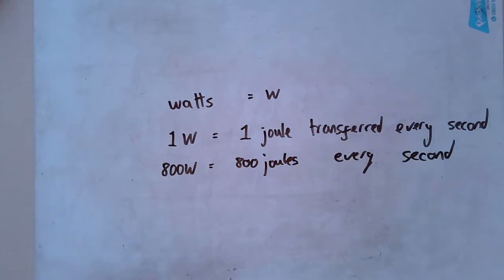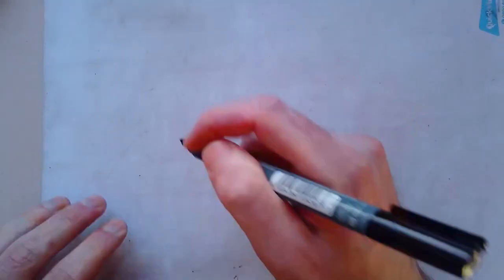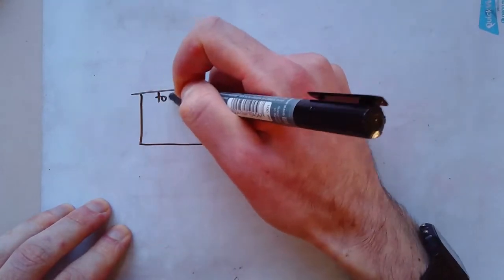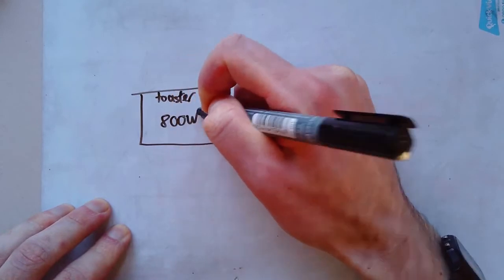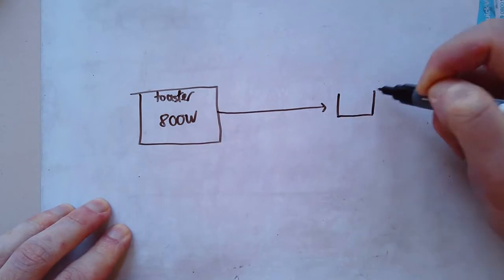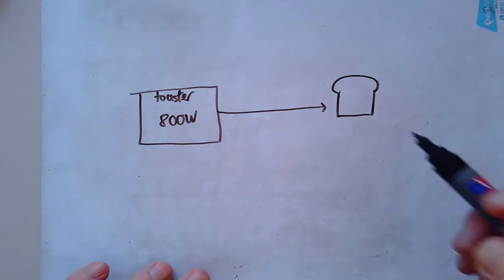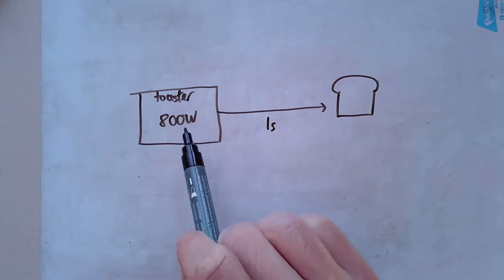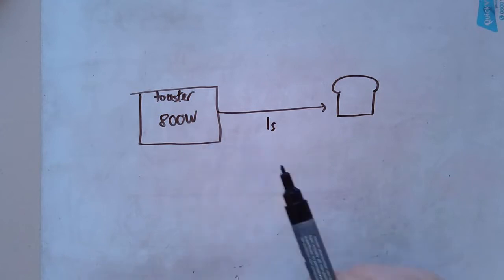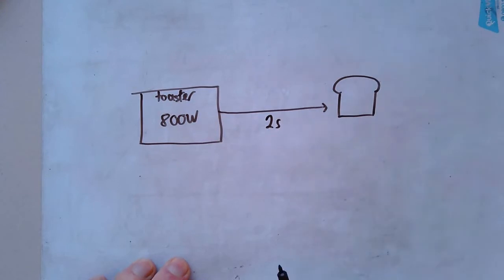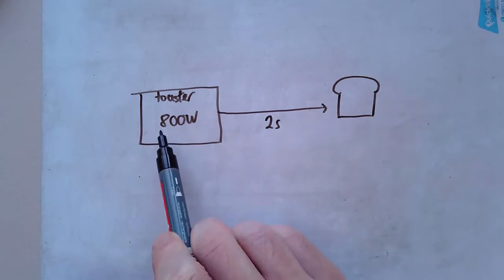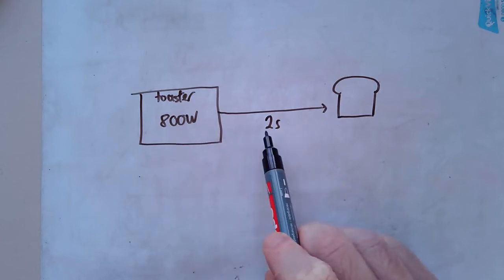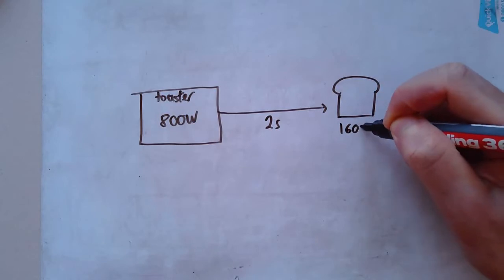Now let's say I take my toaster, and my toaster in this case is 800 watts. And it's transferring energy by heating to a slice of bread. Let's say I left it on for just one second. Now we know that means it would only transfer 800 joules of energy. If I leave it on for two seconds, that's going to be 1600 joules. What I've done there is I've just times that by that. So 800 watts for two seconds means that this slice of bread gets 1600 joules.